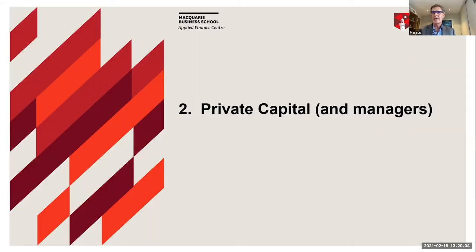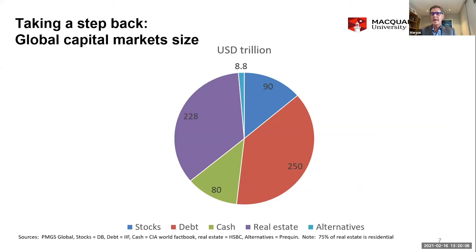Private capital tends to get a greater share of press than the amount of private capital actually out there. Taking a brief step back: the total global capital market size is about $660 trillion. Alternative investments, of which private capital is a part, is really only about $9 trillion of that $660 trillion. That market is dominated by real estate, debt, and cash. The public stock markets are large at about $90 trillion. Let's keep that in perspective.